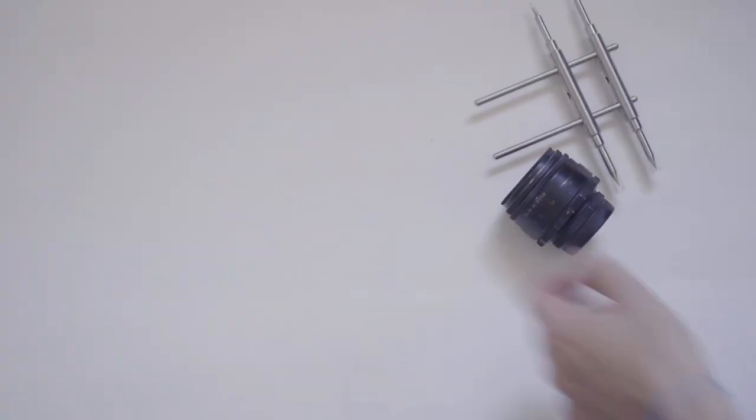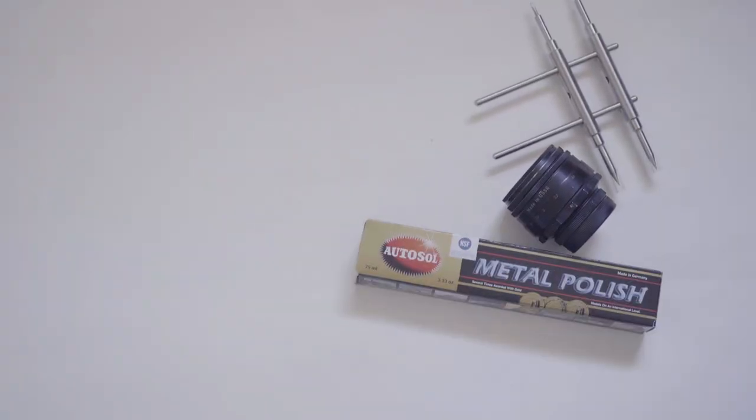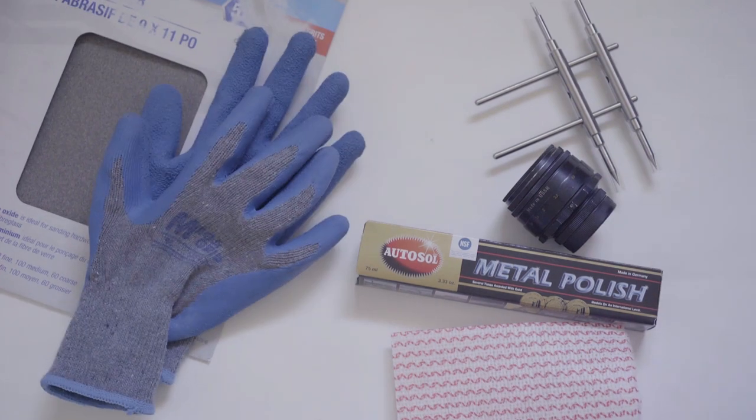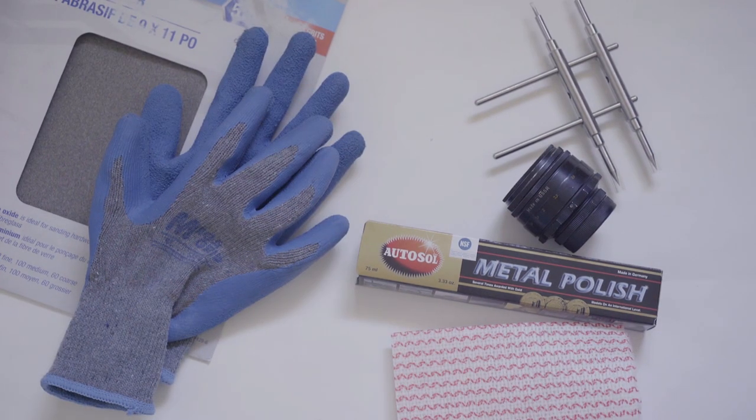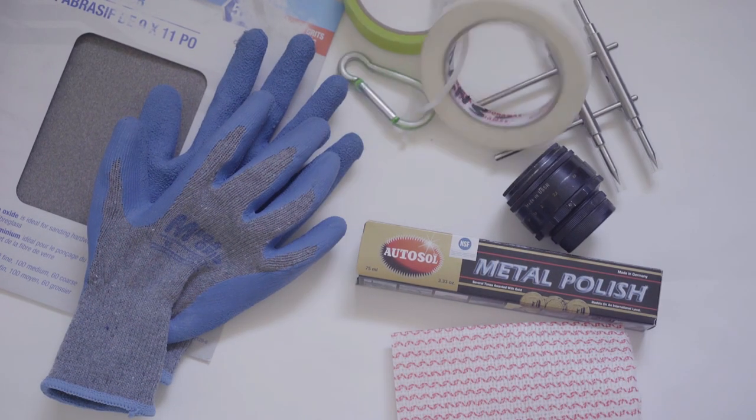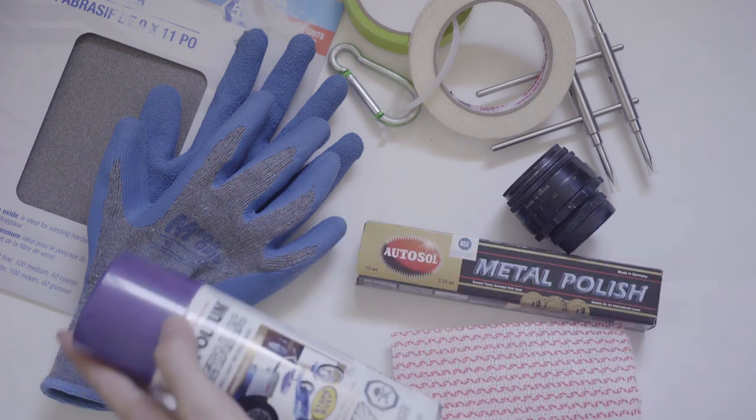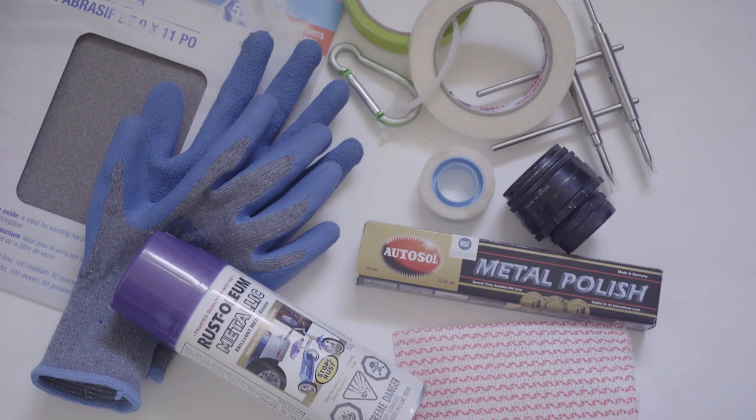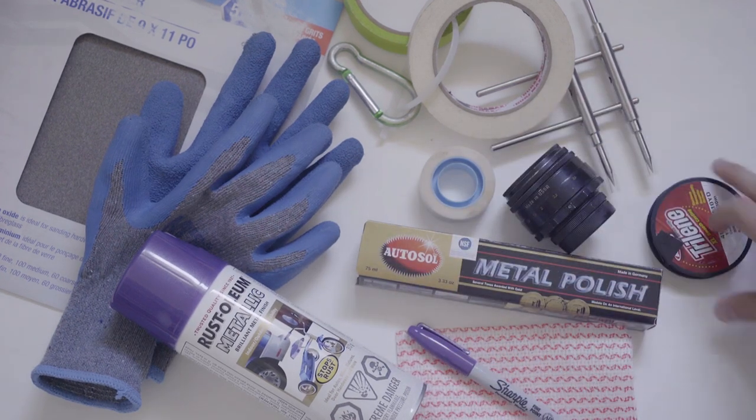So here's what you're gonna need for this process: a lens wrench, a Helios 44 tube, metal polish - I used Autosol following Danel's instructions - a piece of cloth, some sandpaper - I used 100 grit because I did the whole thing by hand - masking tape, a can of metal paint, transparent tape, Sharpie markers and thin fishing line.